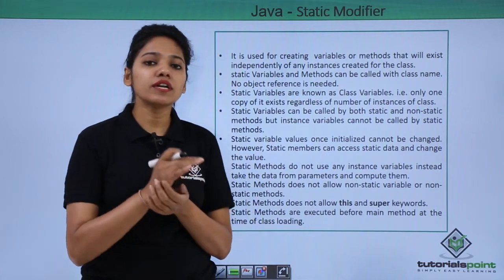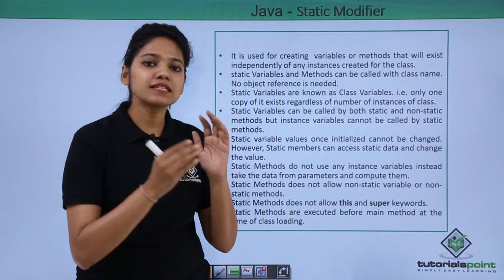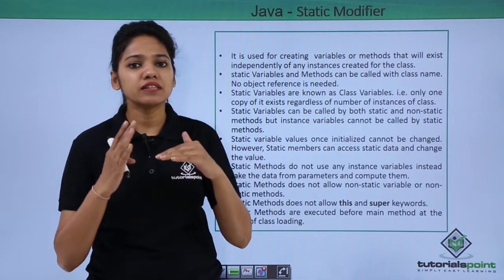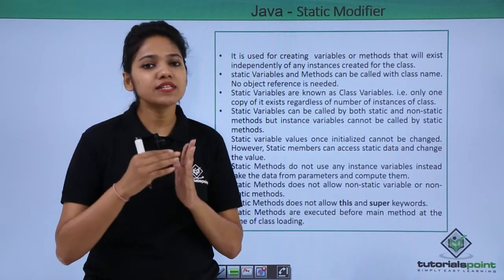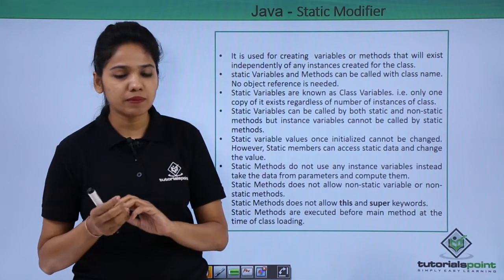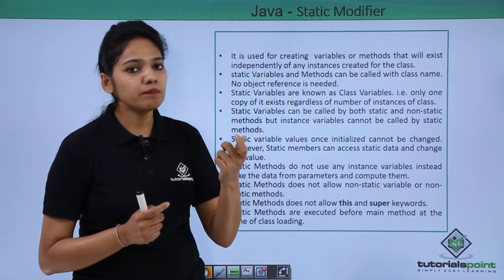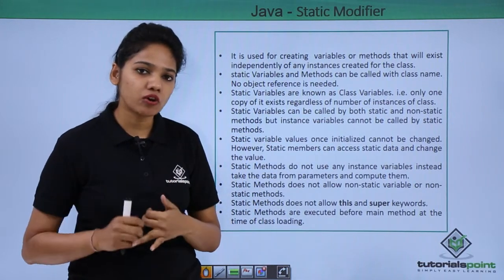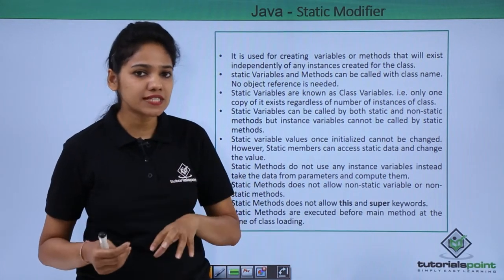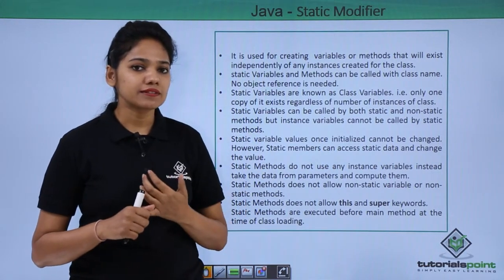Let us understand with an example: we have a class called 'Human' with an integer type static variable 'age' and an instance variable 'name'. It has static methods 'sleeping' and 'walking', and one non-static method. The summary is: the static variable 'age' can be called by all three methods (static and non-static), while the instance variable 'name' can only be called by the non-static method. Instance variables cannot be used in static methods.